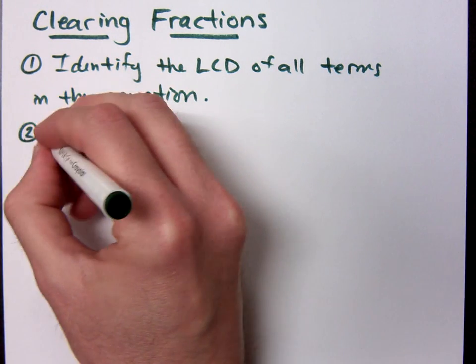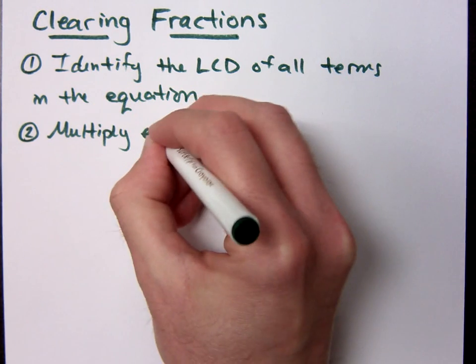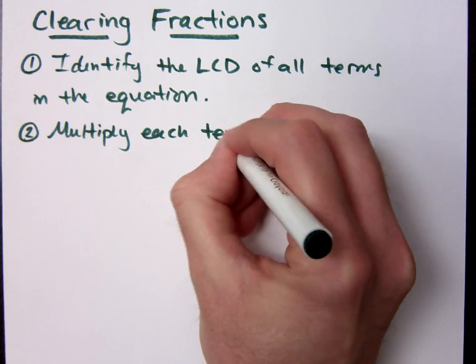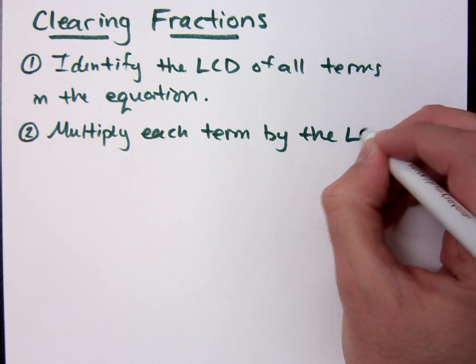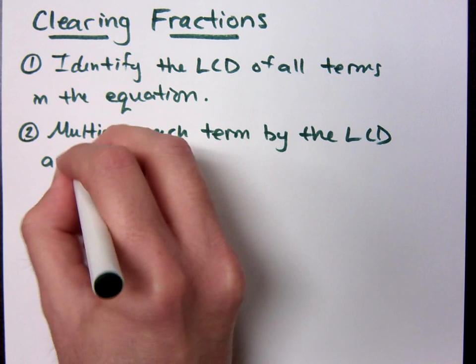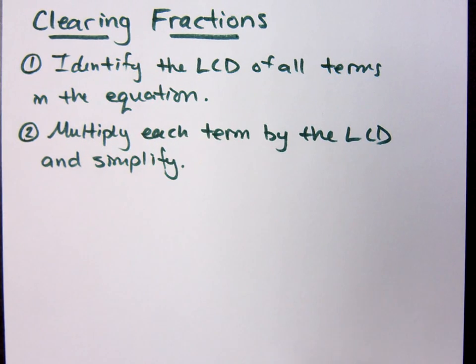Once you've done that, multiply each term by the least common denominator and simplify. If you actually have a common denominator, when you multiply times those terms, the denominators that I already have are going to reduce away. You're going to simplify. It's going to be fantastic.